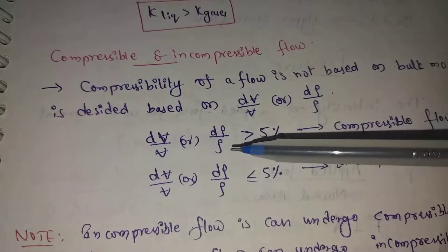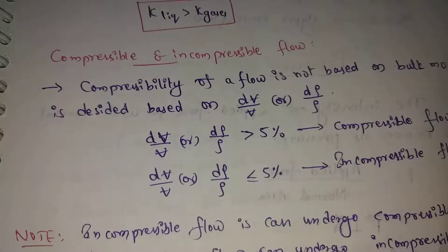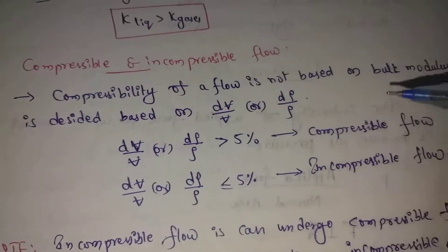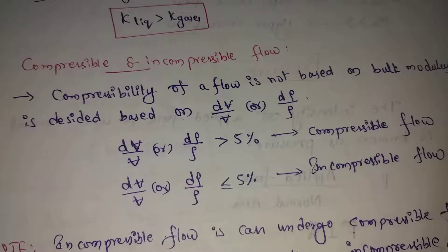A change in volume or change in density greater than 5% is compressible flow. This change in volume greater than 5% criterion is very important for classifying compressible flow.